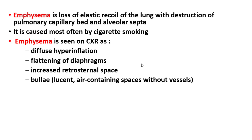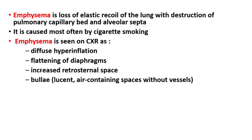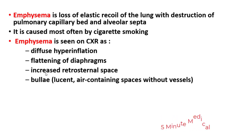Emphysema is a loss of elastic recoil with destruction of the pulmonary capillary bed and alveolar septa, most commonly caused by cigarette smoking. Chest X-ray findings include diffuse hyperinflation of the lung, flattening of the diaphragm, increased retrosternal space, and sometimes bullae — lucent air-containing spaces without vessels — which are clinically important because their rupture can cause pneumothorax.